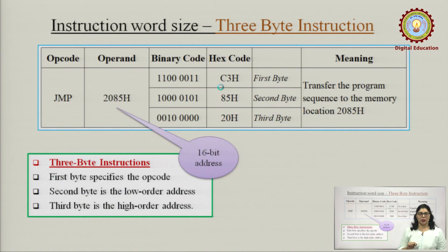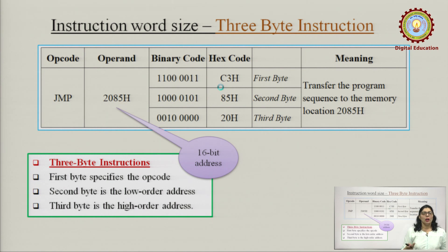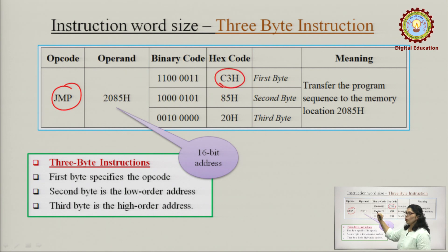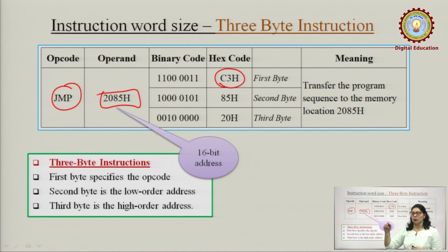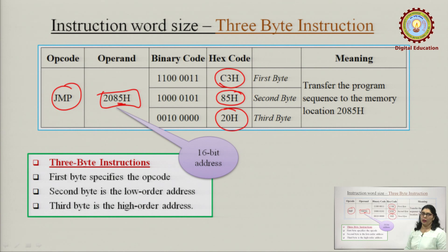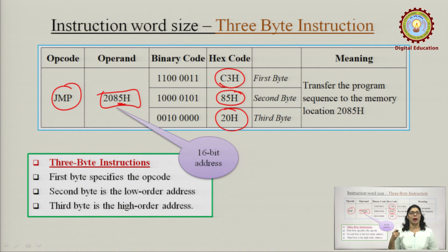Then next is the three byte instruction. Three byte instruction mein koi bhi jump instruction hogi, ya koi bhi load ki instruction hogi — woh three byte instructions mein aegi. Because the opcode for jump will go in the first byte, aur us ke baad jo hamne 16-bit address mention kiya hai, woh jayega. Sab se pehle is 16-bit address ka lower part jayega, aur us ke baad higher byte jayega. So this type of instruction will become a three byte instruction.